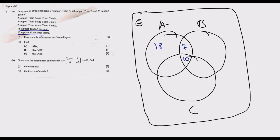Next, 5 support Team B and Team C only — they are found in B and C but not in A — so the 5 goes in the B∩C only region. Then 2 support Team A and Team C only — found in A and C but not in B — so 2 goes in the A∩C only region.